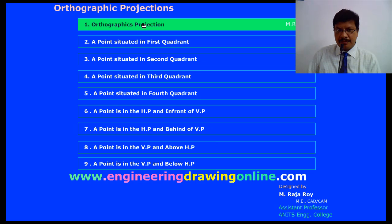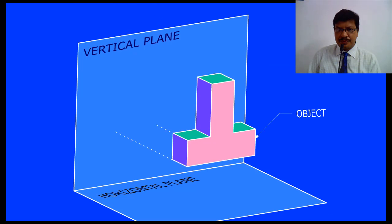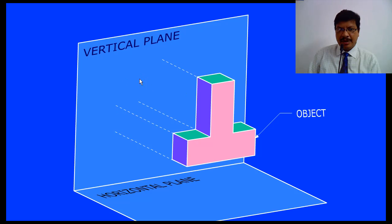Orthographic projection. This is the object here. When lines are drawn from various points on the object and these lines are meeting this plane somewhere here, as a result of that we will get intersection points on the plane. If you join all these intersection points in a correct sequence, whatever figure you have obtained on this plane is called as projection.